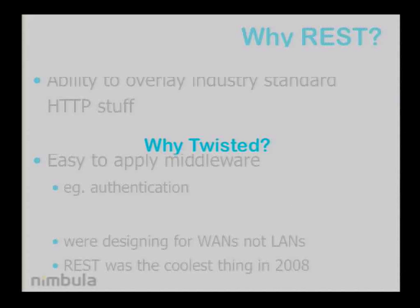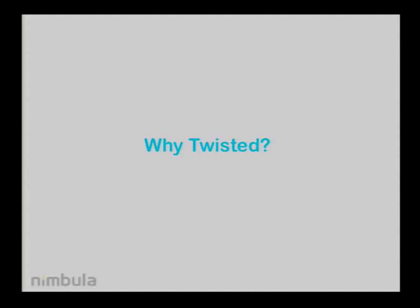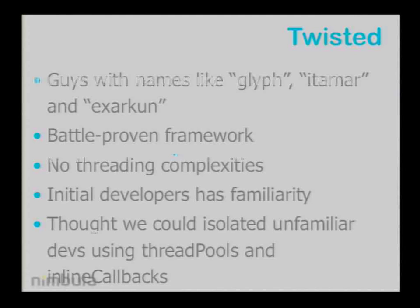Why Twisted? It's more of an implementation choice than an architecture choice. It's a battle-proven framework — it now ships with OS X, it's used on very large sites. It gives us no threading complexity; we don't have to deal with deadlocks or shared state between threads. Our initial developers were all Python devs and we had some Twisted familiarity. We also thought that we could isolate new devs using thread pools and inline callbacks.